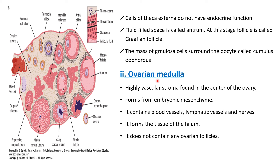Another region of the ovarian stroma is the ovarian medulla. The ovarian medulla is a highly vascular stroma found in the center of the ovary. It forms from embryonic mesenchyme during embryonic development in the mother's womb. It contains blood vessels, lymphatic vessels, and nerves — these enter the ovarian medulla at the hilum, the place where the ovaries are attached to the uterus. The medulla does not contain any ovarian follicles; ovarian follicles are present in the ovarian cortex region only.